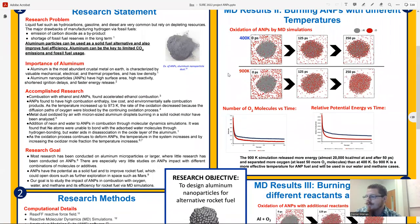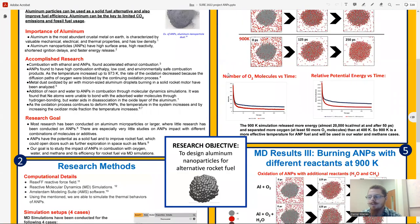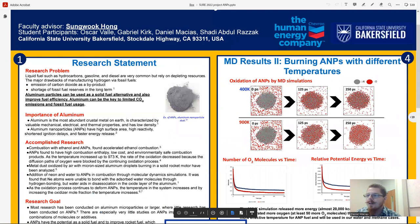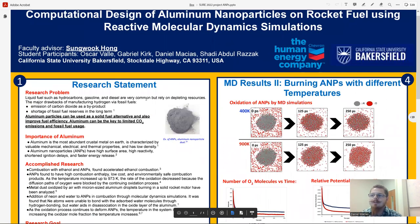Our research objective is to design aluminum nanoparticles for alternative rocket fuel. There's an example image of an aluminum nanoparticle through AMS molecular dynamics. Our problem is that liquid fuel such as gasoline and diesel are very common but rely on depleting resources. The major drawbacks of liquid fuel is that they emit carbon dioxide and there's going to be a shortage of fossil fuel reserves in the long term. Aluminum particles can be used as a solid fuel alternative and can also improve fuel efficiency. Aluminum can be the key to limiting carbon dioxide emissions and helping with fossil fuel usage.